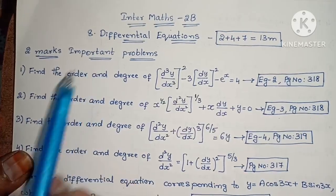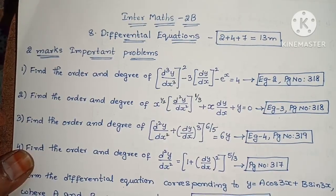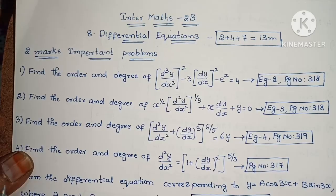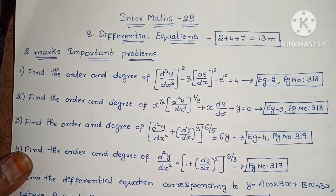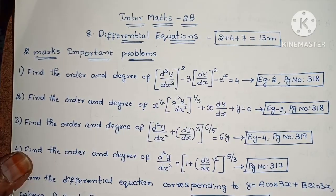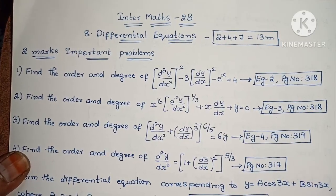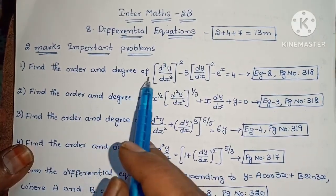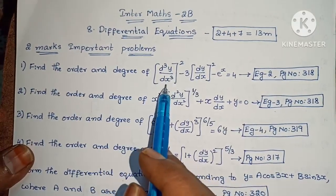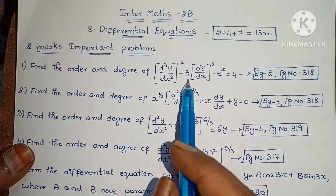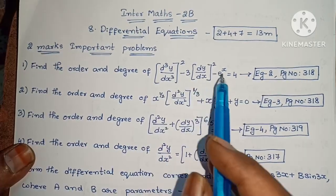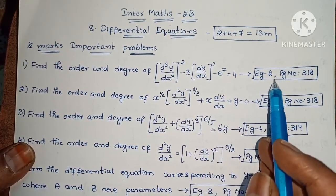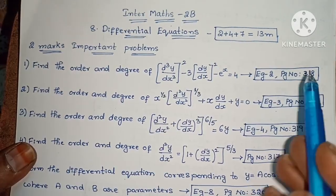Our first section will be 2 marks problems. I have already explained the solutions — link in the description below. First, I will open the problems. First one: find the order and degree of (d³y/dx³)² minus 3(dy/dx)² minus eˣ equals 4. Example 2, page number 318.